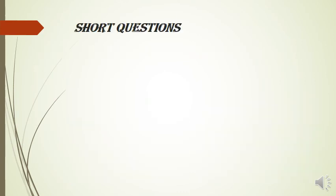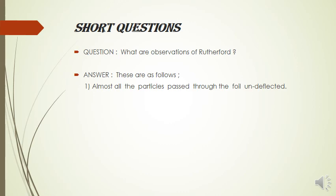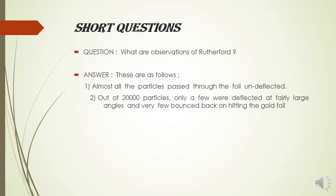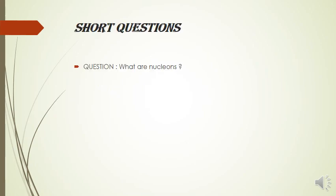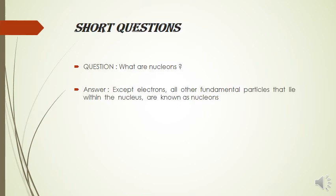Now let's look at short questions you will face from this topic. Number one: what are Rutherford's observations? You will see the observation heading. These are as follows: number one, almost all particles passed through the foil undeflected. The other is out of 20,000 particles, only a few were deflected at fairly large angles, and very few bounced back on hitting the gold foil. Another short question: what are nucleons? Except electrons, all other fundamental particles that lie within the nucleus are known as nucleons.